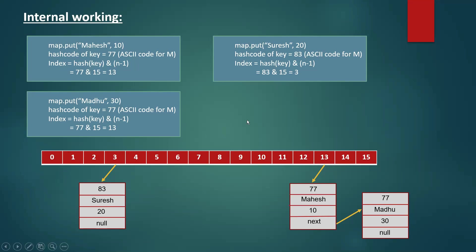Another example: map.get('Madhu'). The hash code is calculated and we get index 13. At index 13 the key 'Madhu' is compared with 'Mahesh' — they are not equal. Then the node reference is checked; since it is not null, we traverse to the next node. In the next node the key is compared with 'Madhu' using equals — this time it is equal, so the value 30 is returned. If after traversal the node reference is null and no match is found, null is returned.